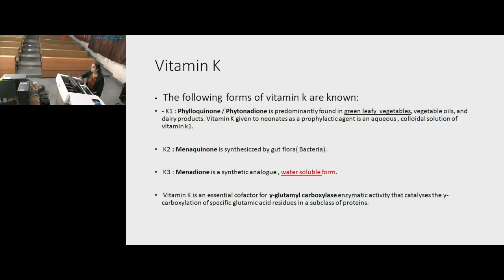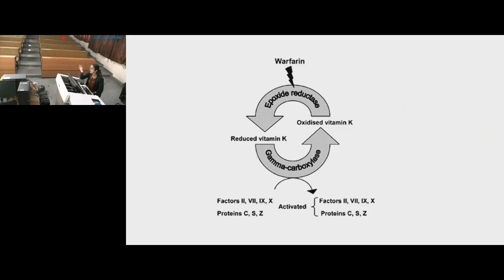Vitamin K is an essential co-factor for the gamma glutamyl carboxylase enzyme. The clotting factors have glutamic acid residues that need a carboxylation reaction to become activated. The enzyme gamma glutamyl carboxylase, along with CO2 and vitamin K as a co-factor, drives this reaction. In the process, active vitamin K gets oxidized to its epoxide form; the factors 2, 7, 9, 10 and proteins C, S, Z are activated via gamma carboxylase.